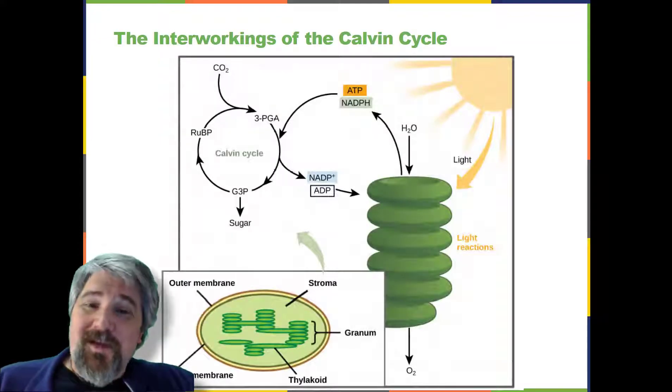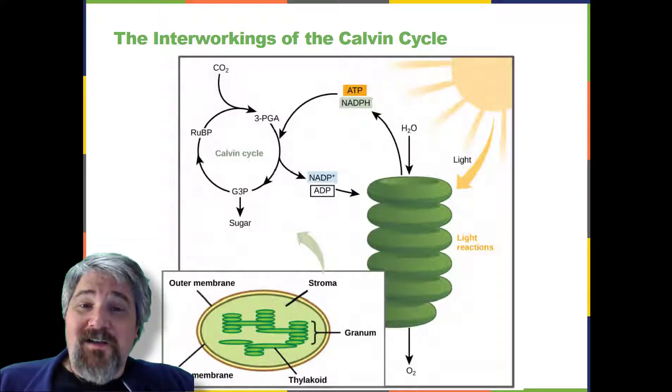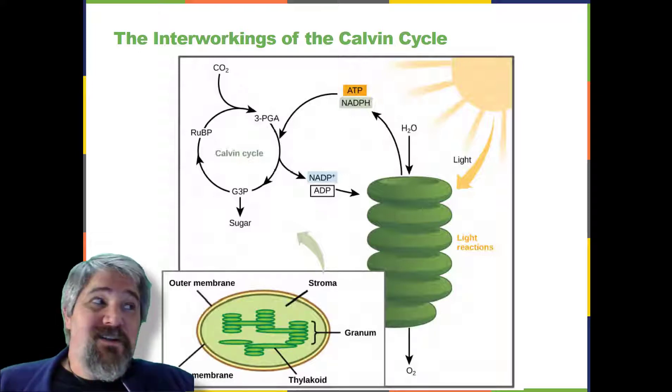The Interworkings of the Calvin Cycle. In plants, carbon dioxide enters the chloroplast through the stomata and diffuses into the stroma of the chloroplast, the site of the Calvin Cycle reactions where sugar is synthesized. The reactions are named after the scientists who discovered them and reference the fact that the reactions function as a cycle. Others call it the Calvin Benson Cycle to include the name of another scientist involved in its discovery.